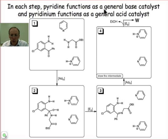What we want to do in each step is to use the pyridine, that's the neutral heterocyclic benzene-looking heterocyclic. It's going to function as a general base, and the conjugate acid of that, pyridinium, is going to function as a general acid.